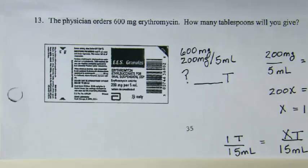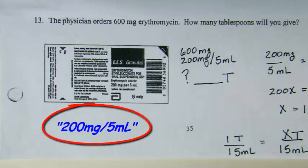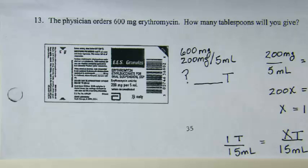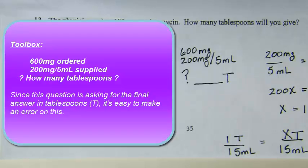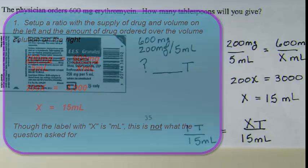With the last objective 3 problem: the physician orders 600 milligrams erythromycin — how many tablespoons will you give? According to the label supplied, our supply of drug is 200 milligrams per 5 milliliters. In our toolbox we have that supply, 600 milligrams ordered, and a question of how many tablespoons. Our ratio and proportion shows a supply of 200 milligrams per 5 milliliters on the left-hand side, and on the right-hand side 600 milligrams ordered, solving for x milliliters.